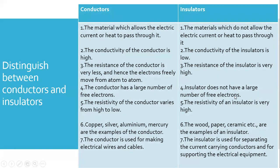Insulators do not have a large number of free electrons — that is why wood and plastic are insulators. The resistivity of conductors is low, while the resistivity of insulators is very high. Examples of conductors are copper, silver, aluminium, and mercury. Examples of insulators are wood, paper, and thermostats.